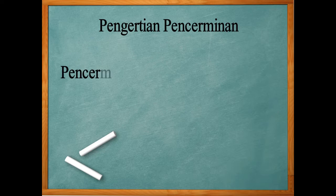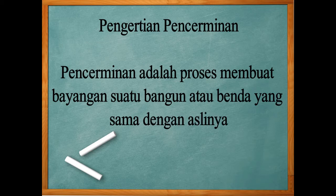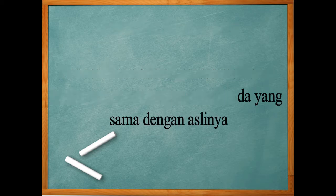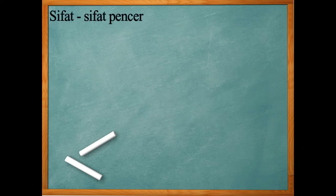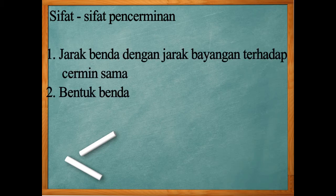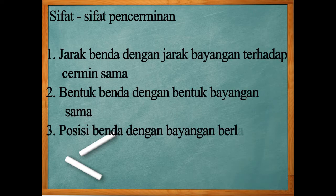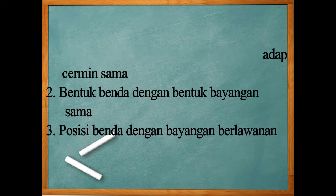Pengertian Pencerminan: Pencerminan adalah proses membuat bayangan suatu bangun atau benda yang sama dengan aslinya. Sifat-sifat pencerminan: 1. Jarak benda dengan jarak bayangan terhadap cermin sama. 2. Bentuk benda dengan bentuk bayangan sama. 3. Posisi benda dengan bayangan berlawanan.